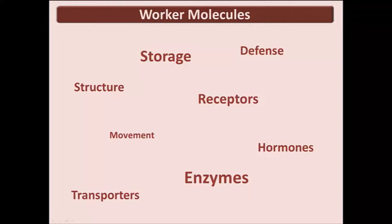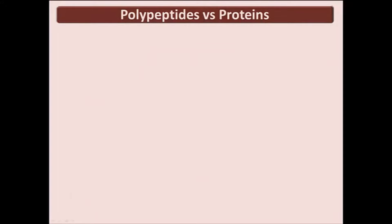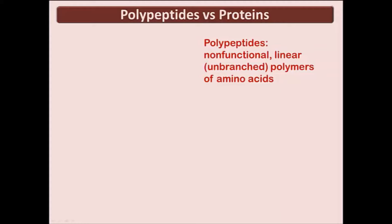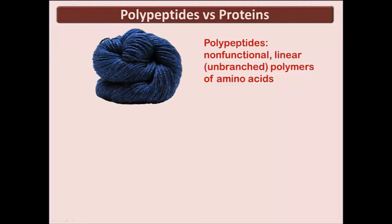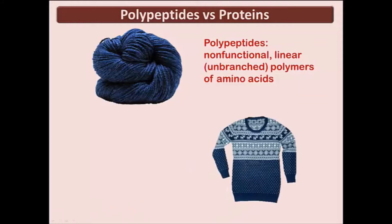Proteins have many functions. They are necessary for DNA replication and are an essential part of the cell cycle. All proteins are made from the same 20 amino acids. A polymer of amino acids is called a polypeptide. Polypeptides are linear, unbranched chains of amino acid polymers. Proteins are functional; polypeptides are not. Polypeptides could be thought of as the yarn that makes up a sweater — the sweater itself, however, is functional and analogous to protein.